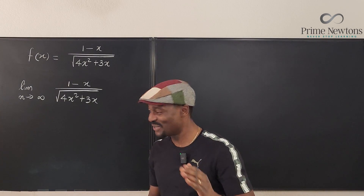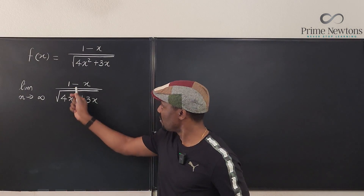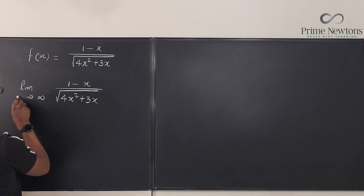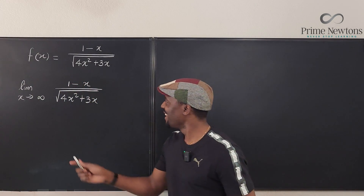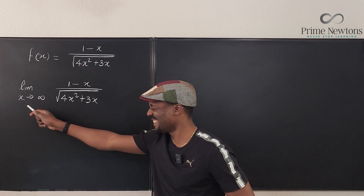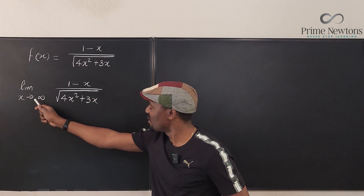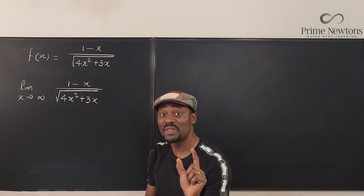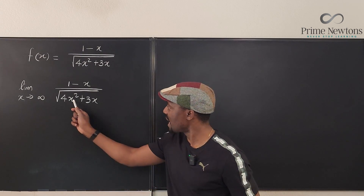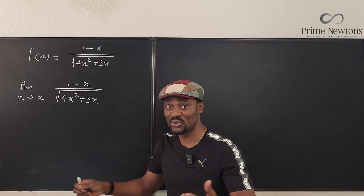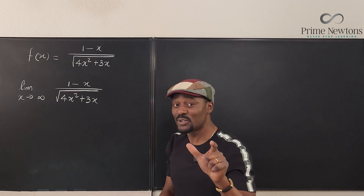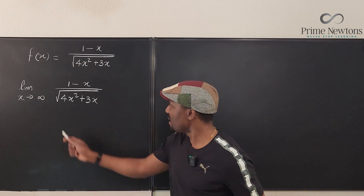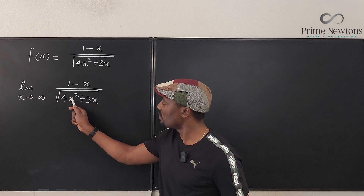Generally when dealing with a rational function and x is approaching infinity, you focus on the term in the denominator with the highest power. The highest power we have is x², but it's not really x² — because when you take the square root of x² you get x, but not really: the square root of x² is the absolute value of x. That confusion is exactly what I want to address. When you have a square root sign, take out x² from the denominator.